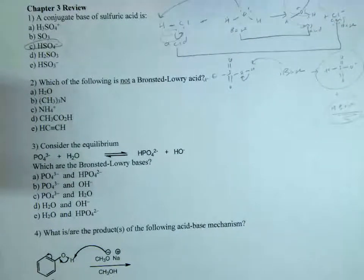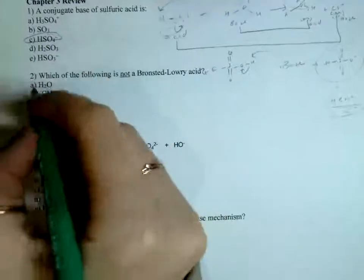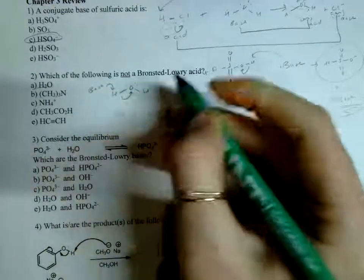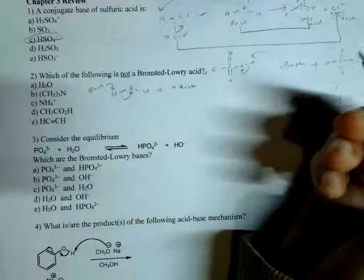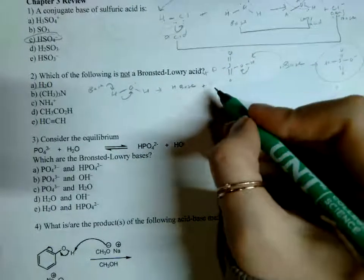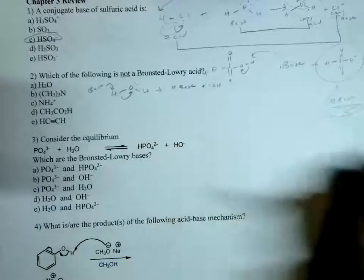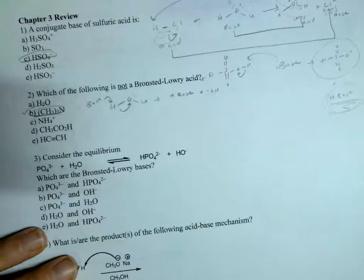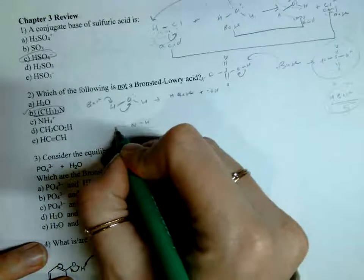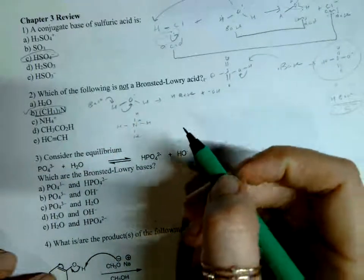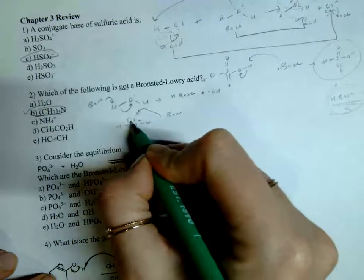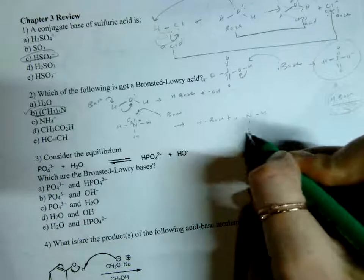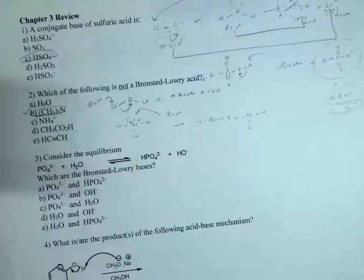A Bronsted-Lowry acid is something that can donate a proton. H₂O, although it doesn't want to, if a strong enough base comes along it can steal the proton and give you OH⁻ — that's how you get things like NaOH. The answer choice that doesn't have any proton available has no proton that can be given up, so that's the right answer. But let's check through all of them: NH₄⁺ has a positive charge and wants to lose a proton, so most bases could take it.